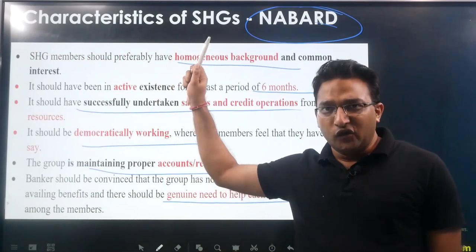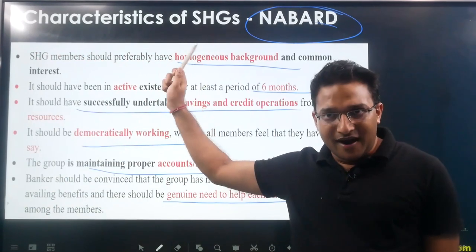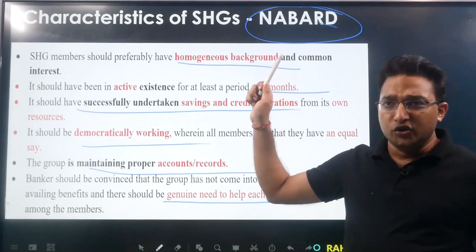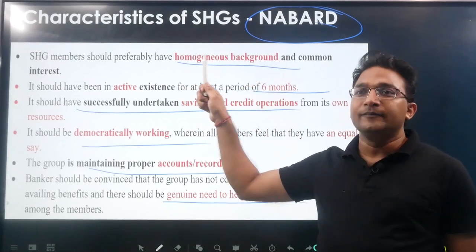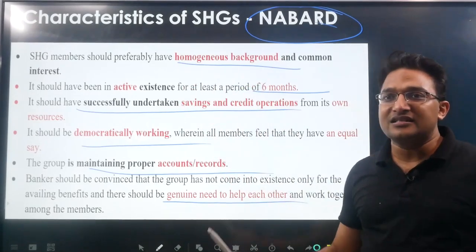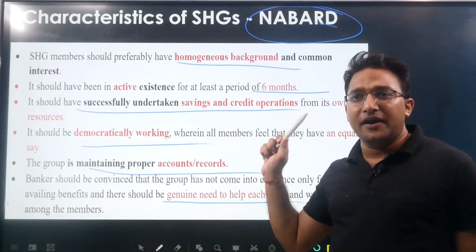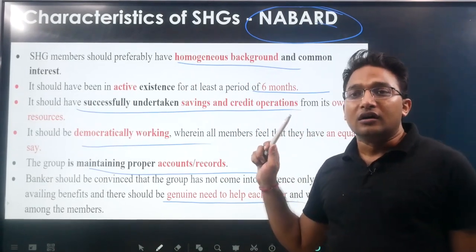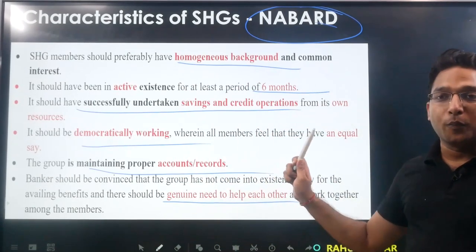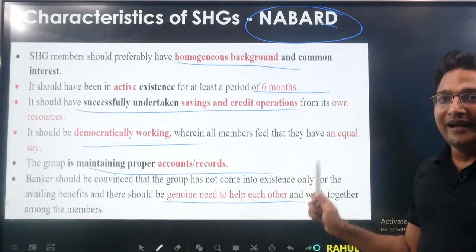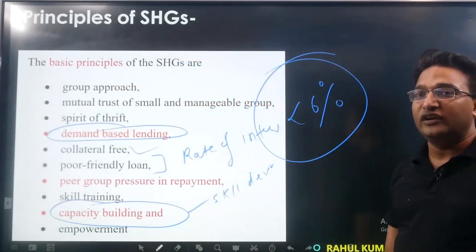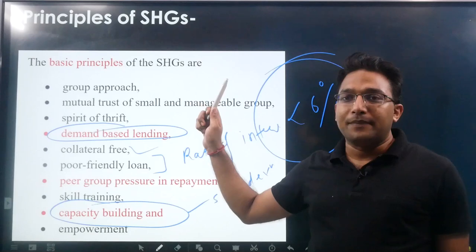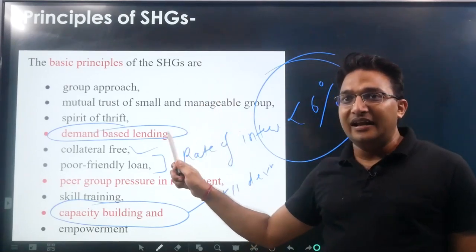Characteristics as per NABARD include: homogeneous background, six months of existence, successfully undertaken savings and credit operations, democratically working, proper accounts, and helping for the genuine need of each other.